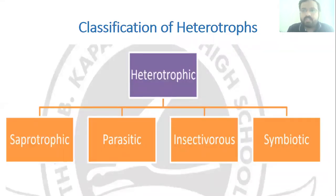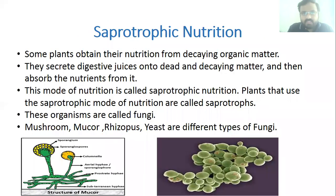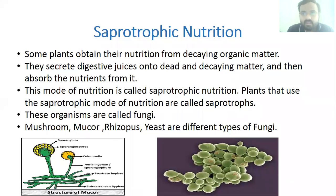Heterotrophic plants are classified into four major categories: saprotrophic, parasitic, insectivorous, and symbiotic. First is saprotrophic nutrition. Organisms which grow on dead and decaying matter and consume nutrition from it are called saprotrophic organisms, and this mode of nutrition is called saprotrophic nutrition.